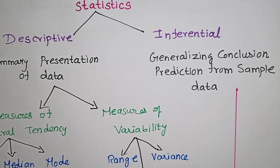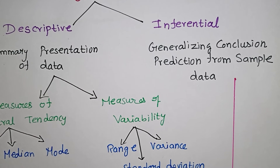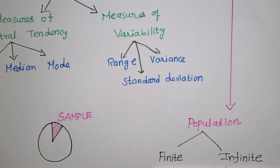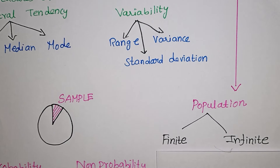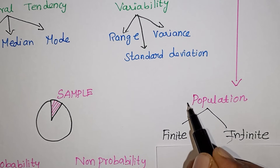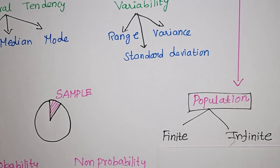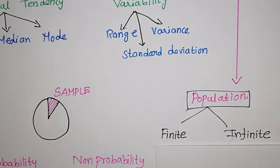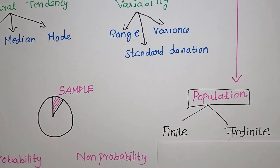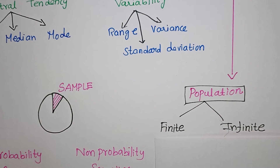In inferential statistics, we use sample data to make inferences about the population. The population is a large group of people — for example, the blood pressure levels of people over 60 years old that we surveyed. All those numbers together form a population.